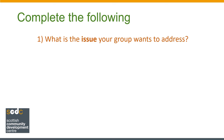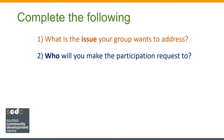What is the issue your group wants to address? For this, go back to the improvements to public services you said you'd like to see. Once you've got your issue down, state who you will make the participation request to. If you printed off the exercise sheet, the organisations you can make it to are on the second page.